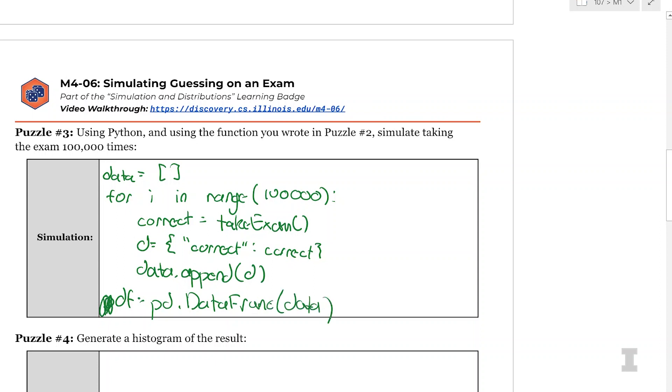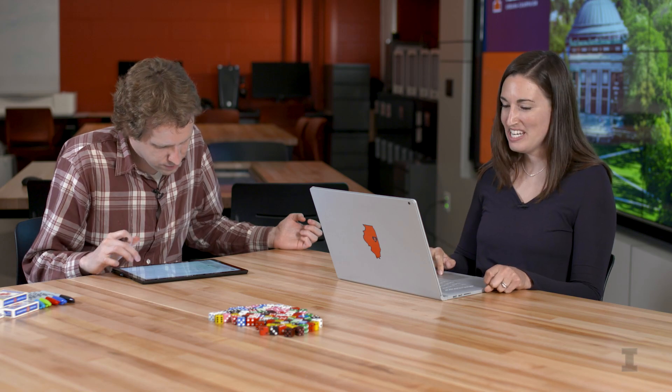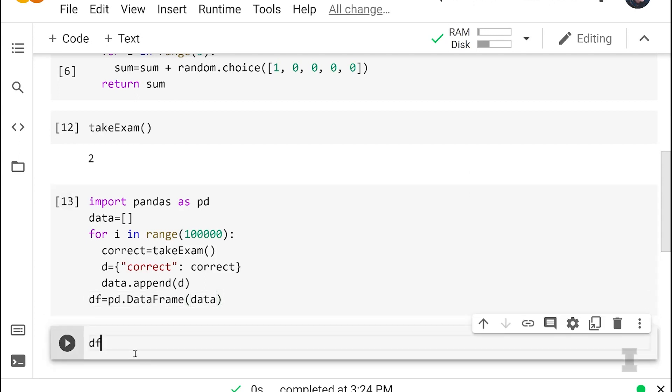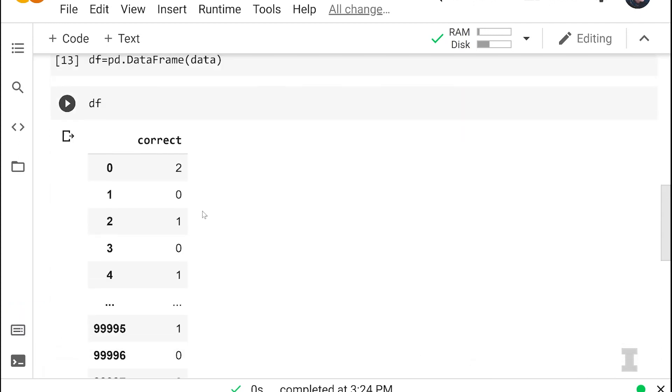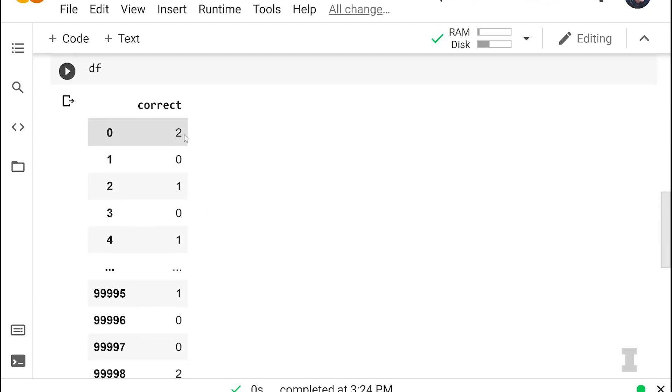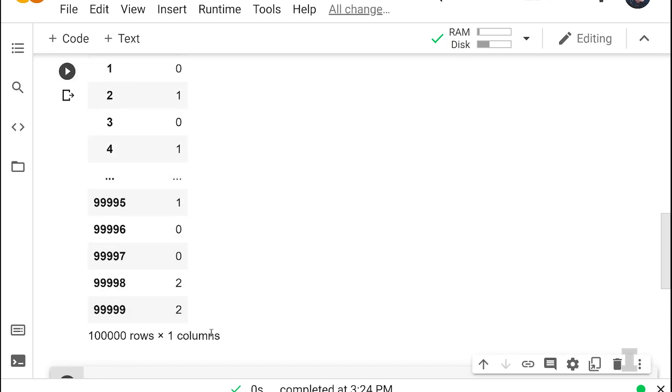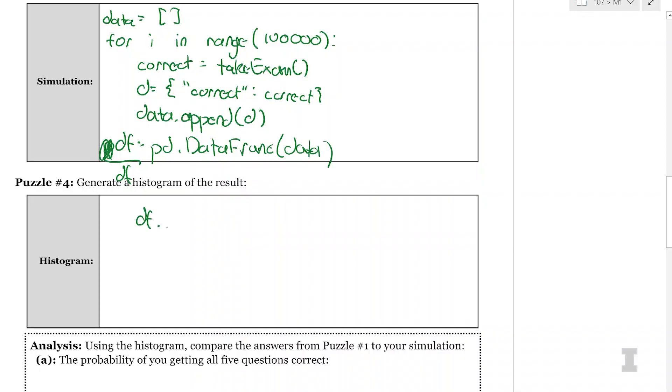So we have written the simulation code again and again and again, and you can see the same patterns used for every single time we run a simulation, no matter if we simulate rolling die, drawing cards, taking an exam, or all the other things we've simulated. And I made sure to import pandas as PD since we're calling PD. And I ran this and there are no errors. Let's go ahead and just type DF to find out what is in our data frame. So we have 100,000 rows with a variable correct. And we have 2, 0, 1, 0, 1, 1, 0, 0, 2, 2. So we've got a lot of different results.